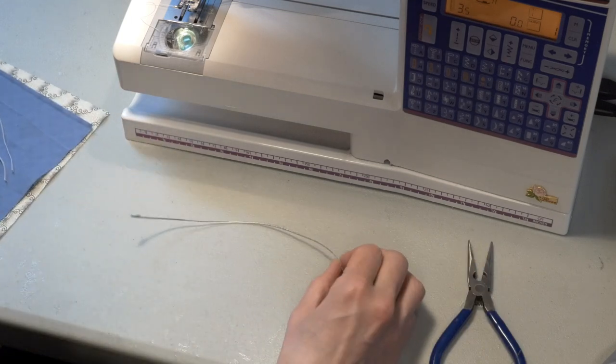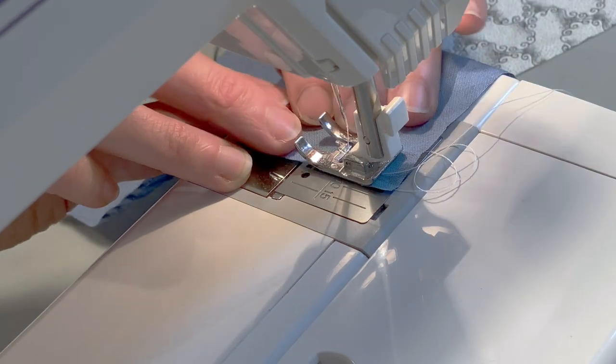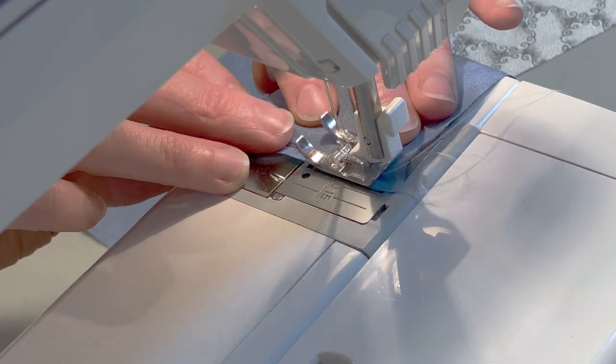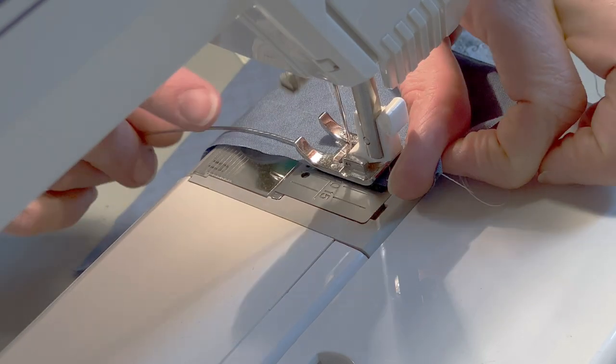Zigzag stitch the piece of wire to the wrong side of one of the pieces of fabric along the longer edge. Stitch as close to the edge as you can without making your fabric all bunched up.